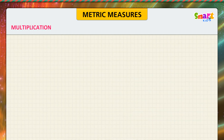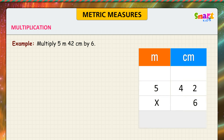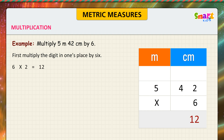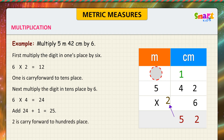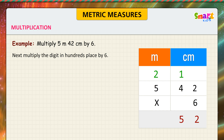Multiplication example: multiply 5 meters 42 centimeters by 6. Look at the problem. First, multiply the digit in the ones place by 6: 6 times 2 is equal to 12; 1 is carried forward to the tens place. Next, multiply the digit in the tens place by 6: 6 times 4 is equal to 24. Add 24 plus 1 is equal to 25; 2 is carried forward to the hundreds place.